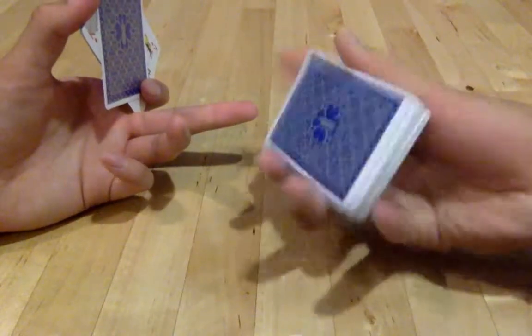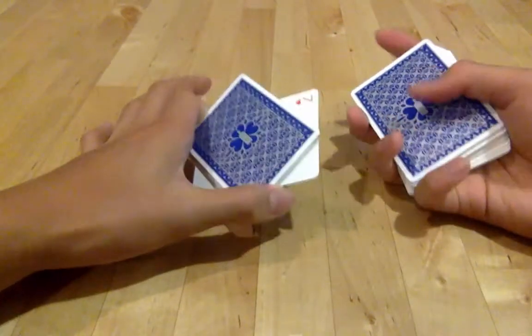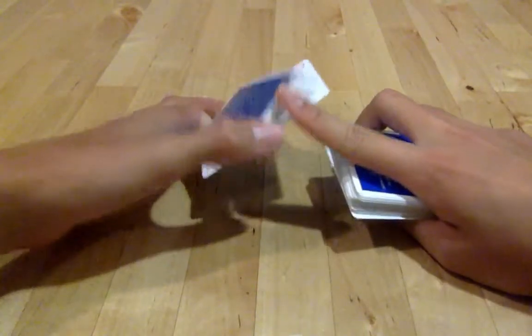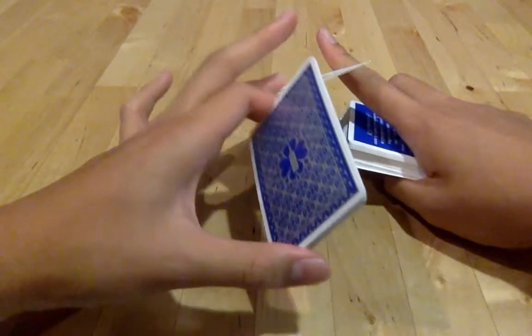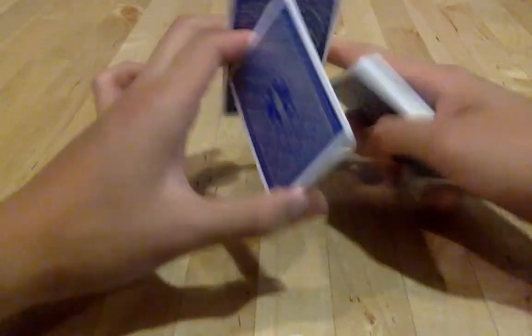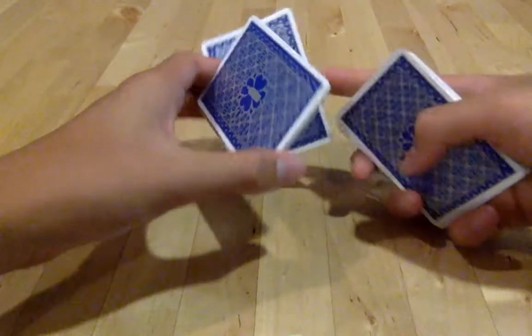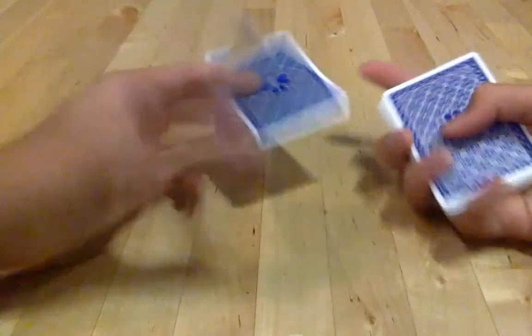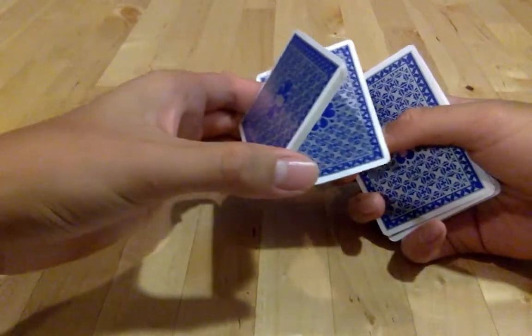Making it a full packet. What you are going to do here is use your right finger and rotate the card. Once you have rotated it, you are going to be in this kind of position where your index and middle is going to be clipping the card.